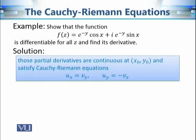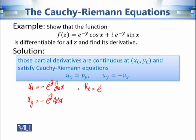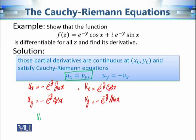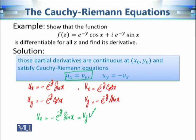Now let's check whether the Cauchy-Riemann equations are satisfied. We have: u_x = −e^(−y)·sin(x), u_y = −e^(−y)·cos(x), v_x = e^(−y)·cos(x), and v_y = −e^(−y)·sin(x). For the first equation, u_x = −e^(−y)·sin(x) and v_y = −e^(−y)·sin(x), so u_x = v_y — the first Cauchy-Riemann equation is satisfied.